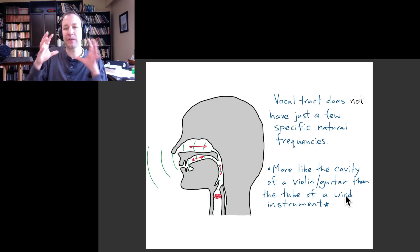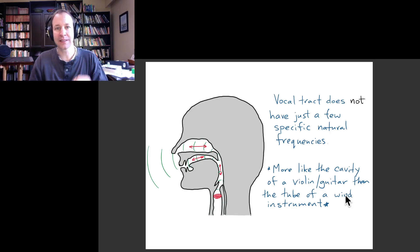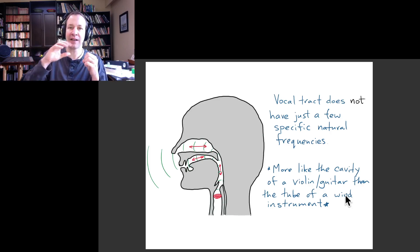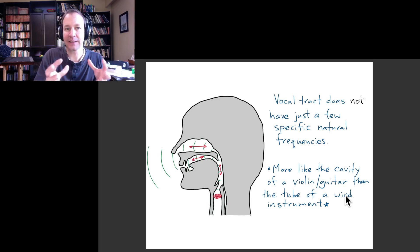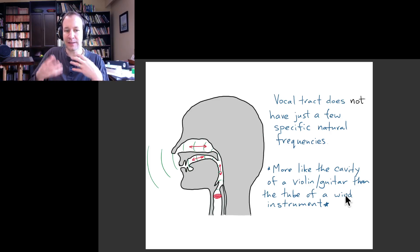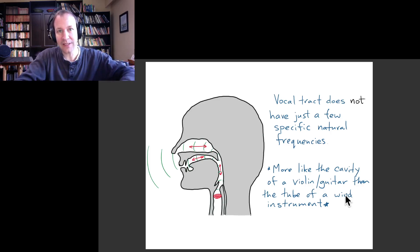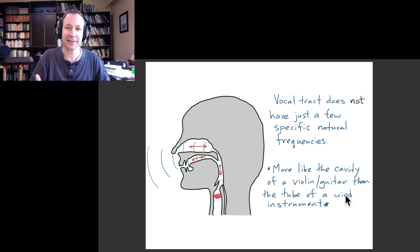The vocal tract does not behave like the inside of a trumpet, flute, or saxophone, where you have very specific frequencies that the air wants to naturally vibrate at. The vocal tract can support oscillations of air at a broad range of frequencies, so it's actually more like the body and cavity of a violin. Just like the strings of a violin oscillate and drive the oscillation of the body and cavity, enhancing the sound, that's basically the same role that the vocal tract is playing.